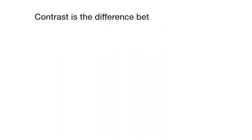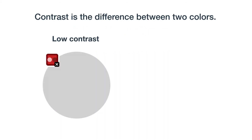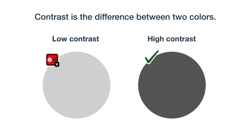Contrast is the difference between two colors. For example, if the background color is white and the foreground color is a light gray, this would be a lower contrast. But if the background color is white and the foreground color is a dark gray, this would be a higher contrast.